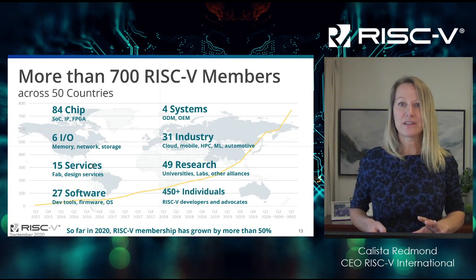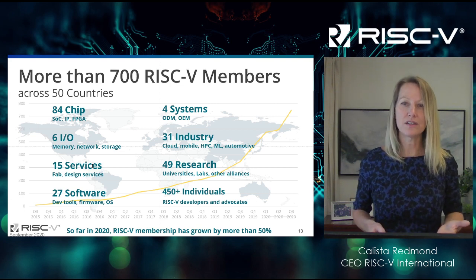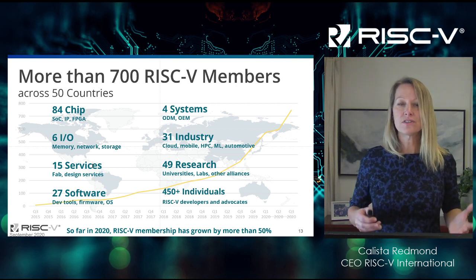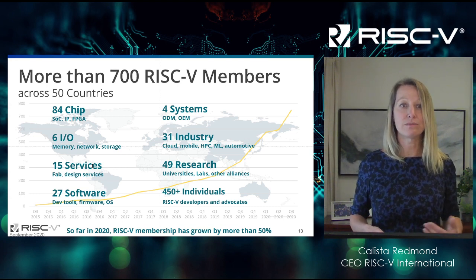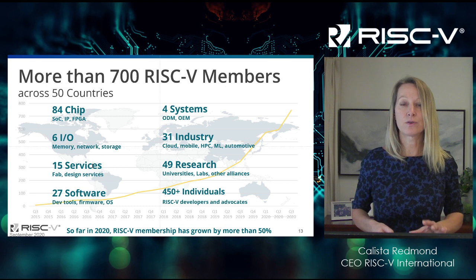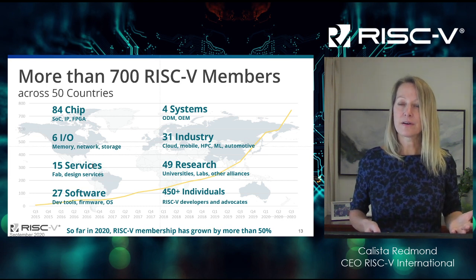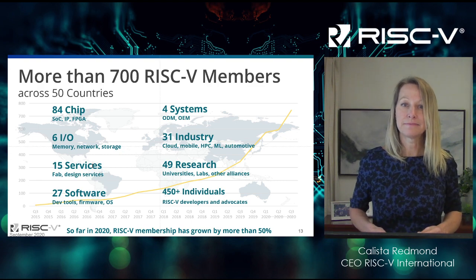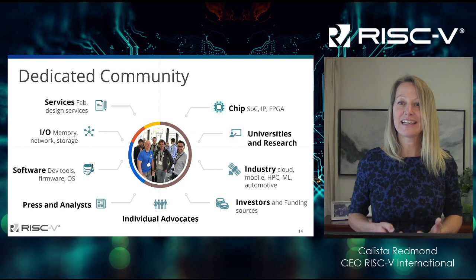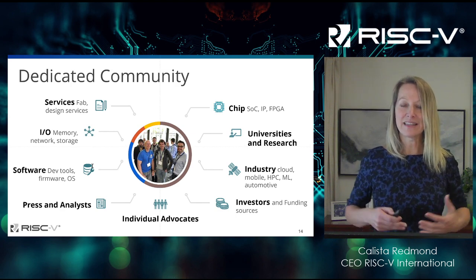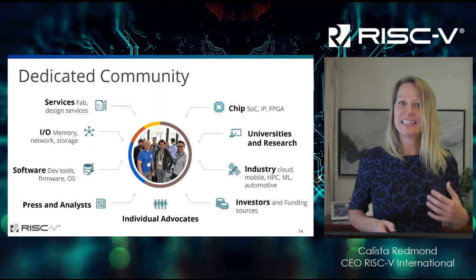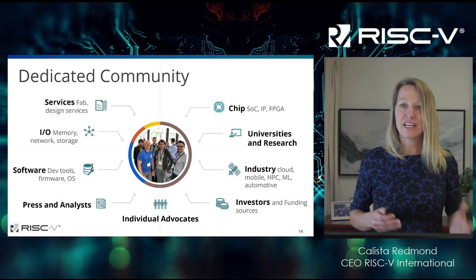At RISC-V International, we're continuing to grow pretty fast. In 2020 alone, our membership has shot up more than 50%. We now have more than 700 members across 50 countries. We're seeing a diversity of members across many stakeholder areas, from chip to software, from IO to industry to research and academia. This growth rate is really quite balanced — about a third of our members in North America, a third in Europe, and another third in APAC. None of us are doing this in isolation; it takes the dedicated engagement of the full community, and the passion and energy from RISC-V is really based in the spirit we see in the community.